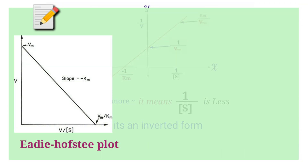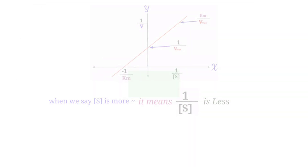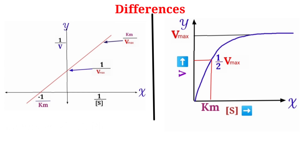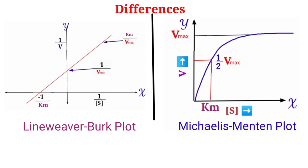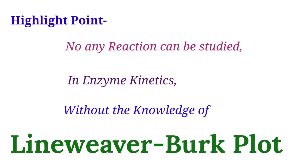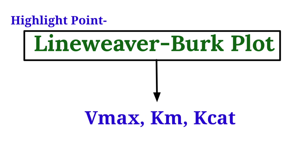To overcome this limitation, other scientists came forward and proposed the Eadie-Hofstee plot and the Hanes-Woolf plot. We will not go into detail about these plots here. The key highlight is the difference between Lineweaver-Burk and Michaelis-Menten plots in terms of expressing enzyme kinetics entities. No reaction in enzyme kinetics can be studied without knowledge of the Lineweaver-Burk plot, as it allows us to determine Vmax and understand the complete reaction kinetics.